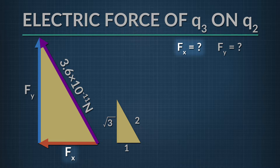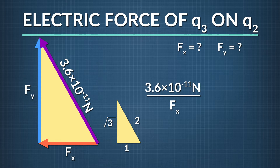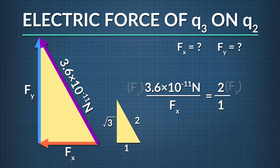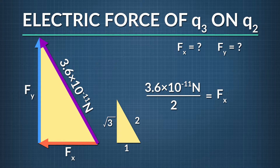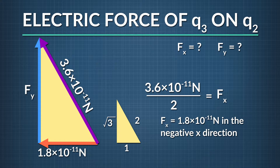We'll let f sub x be the x component of the force, and f sub y be the y component. Solving first for f sub x, we see from the similar triangles that the total force of q3 on q2, 3.6 times 10 to the negative eleventh newtons, divided by f sub x, equals 2 divided by 1. Multiplying both sides by f sub x and dividing both sides by 2, we find that f sub x equals 3.6 times 10 to the negative eleventh divided by 2, which is 1.8 times 10 to the negative eleventh newtons in the negative x direction.